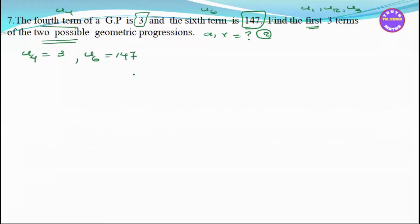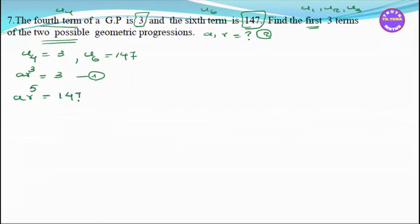Using the GP formula for U4: a·r² = 3, that is equation 1. For U6: a·r⁵ = 147, that is equation 2.